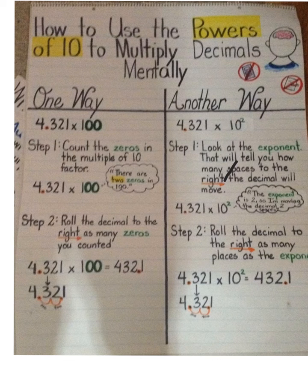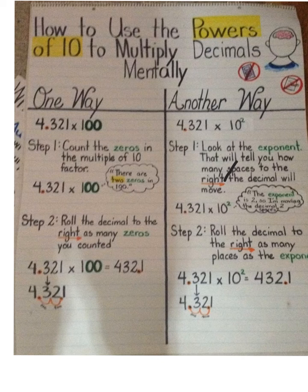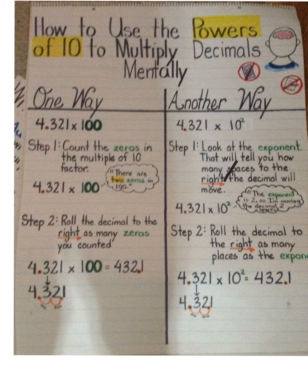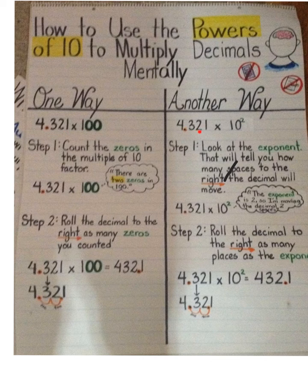Now, you need to pull out your math journals so that we can do our math notes for tonight. Our math notes are going to be on how to use the powers of 10 to multiply decimals mentally. For example, 4 and 321 thousandths times 100 — since there are 2 zeros in 100, we move our decimal point two places to the right. Another way is using exponents: 4 and 321 thousandths times 10 to the power of 2 — the exponent gives us a clue as to how many place values to move the decimal point to the right. Pause the video to get all the notes.